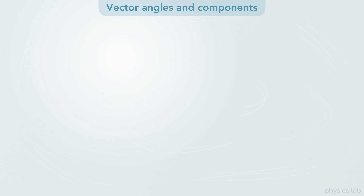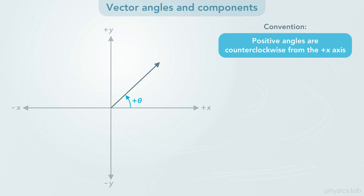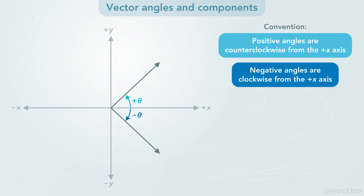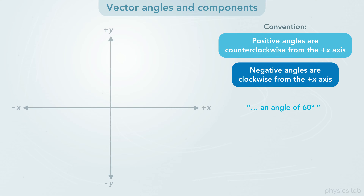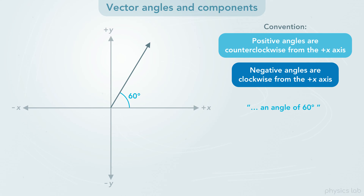So these ways of describing angles are more accurate, but they still use a lot of words. The last method is the conventional way to describe angles. Positive angles are counterclockwise from the positive x axis, and negative angles are clockwise from the positive x axis. Using this method, we only need a single value to describe the angle. If a problem says a vector has an angle of 60 degrees with no other information, then this would be the direction of the vector. We can think of it as the vector starting on the positive x axis and rotating counterclockwise 60 degrees.